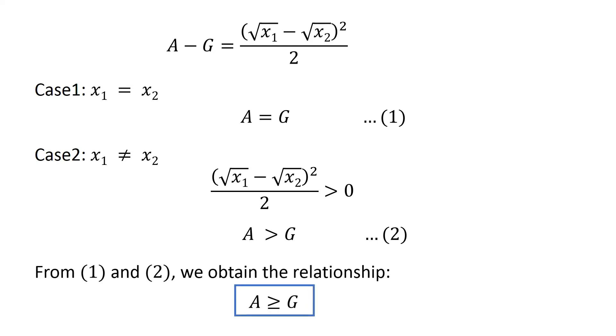From 1 and 2, we obtain the relationship: arithmetic mean is greater than or equal to geometric mean.